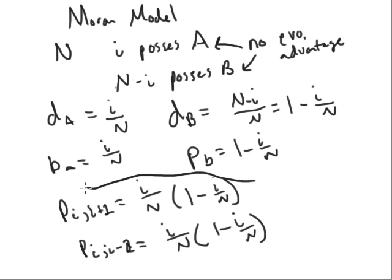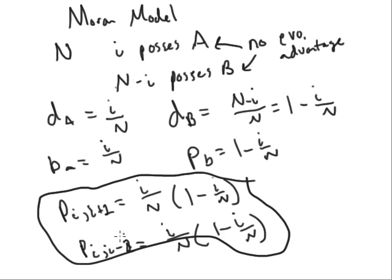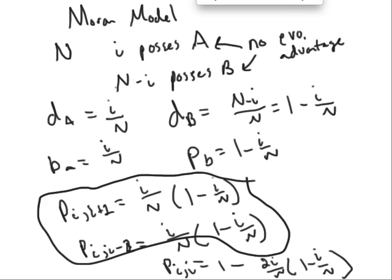So these are the two big results that we're going to be using in a later video. The probability of increasing is this, the probability of decreasing is this, and then since there's only one other possibility, which is staying the same, the probability of staying the same is going to be 1 minus, since these are two equal, 2i over N times 1 minus i over N. So these three results are going to be used in the next video. Thank you.